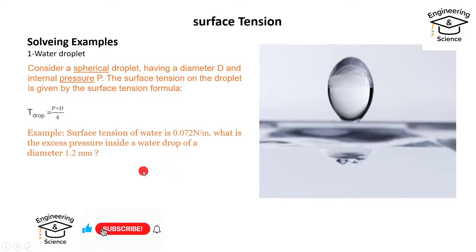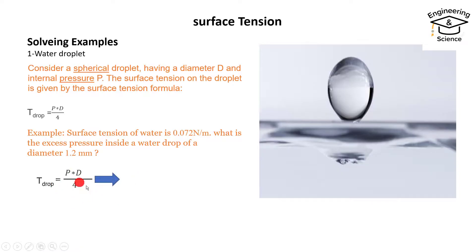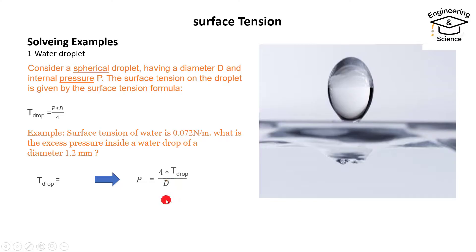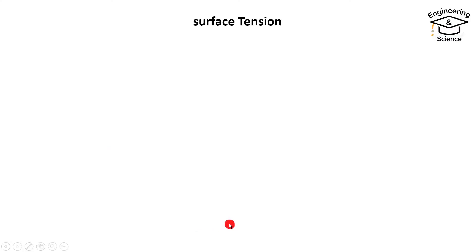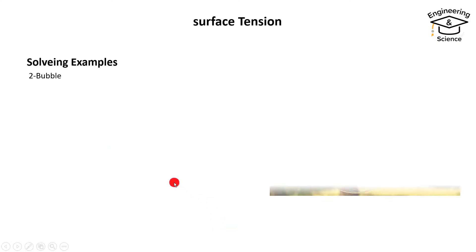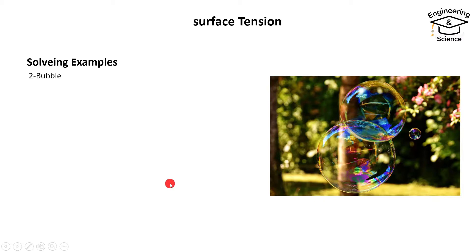To find the pressure, rearrange the formula: pressure equals 4 multiplied by surface tension over diameter (P = 4σ/D). Substituting the data, the result equals 240 Newtons per meter squared. Another case: for a soap bubble, estimate the surface tension given an inside-to-outside pressure difference of 2.5 Pascals and a diameter of 40 mm.